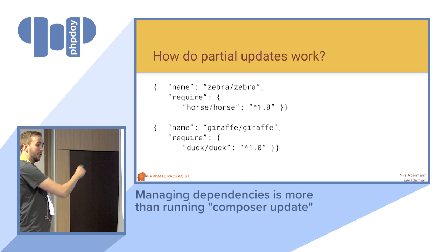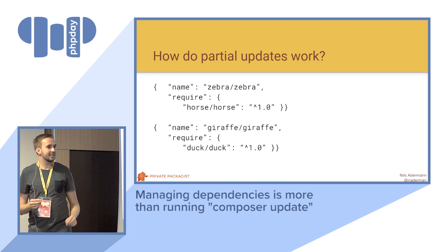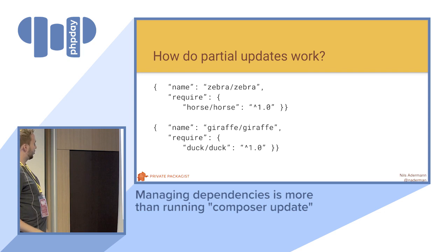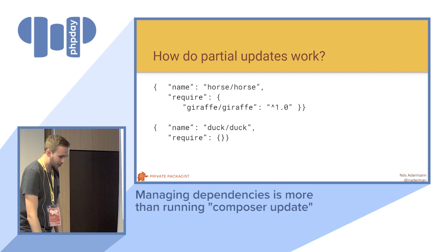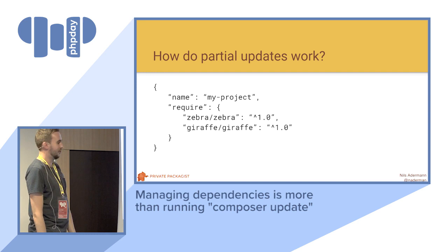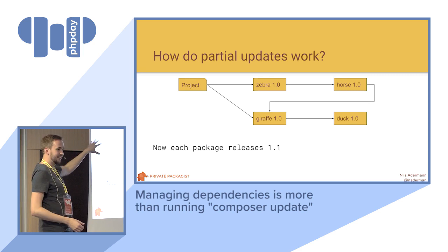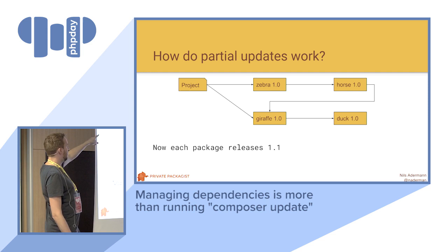Since I mentioned composer update with a list of packages — something that quite a few people don't necessarily understand is how partial updates work. I have a silly example: a package called Zebra that depends on Horse, a package called Giraffe that depends on Duck, a package called Horse that depends on Giraffe, and Duck that doesn't have any dependencies. Some project uses Zebra and Giraffe. As a graph: the project depends on Zebra, which depends on Horse, which depends on Giraffe, which depends on Duck. But the project itself also uses Giraffe directly.